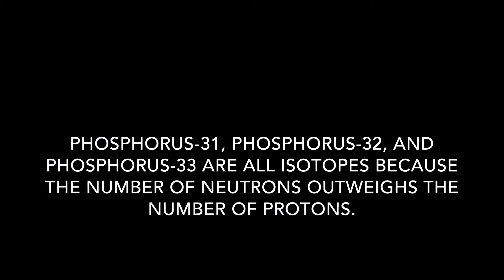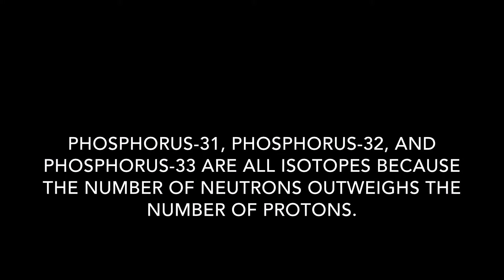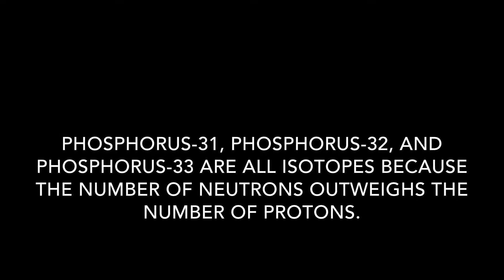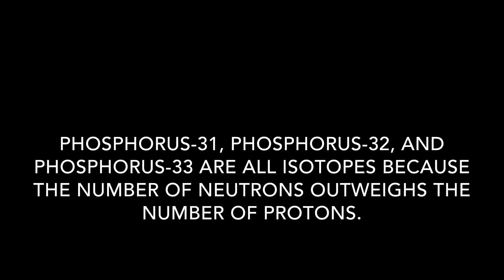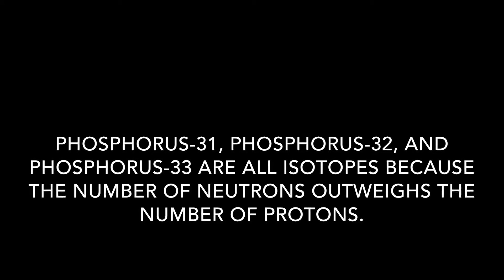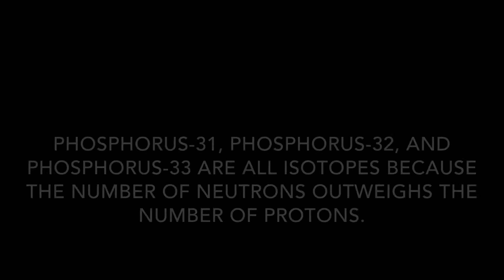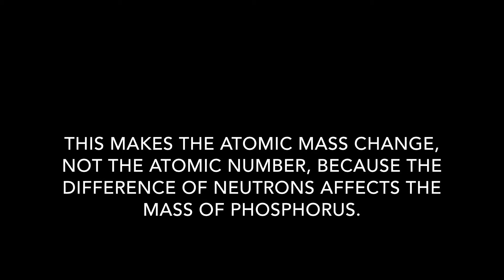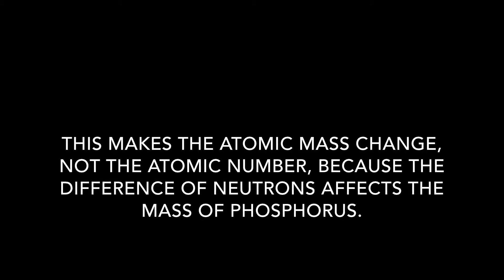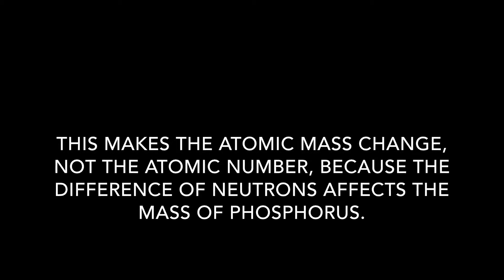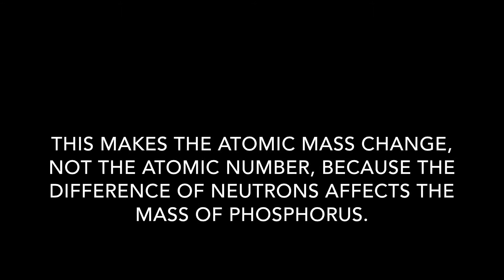Phosphorus 31, Phosphorus 32, and Phosphorus 33 are all isotopes, because the number of neutrons outweighs the number of protons. This makes the atomic mass change, not the atomic number, because the difference of neutrons affects the mass of Phosphorus.